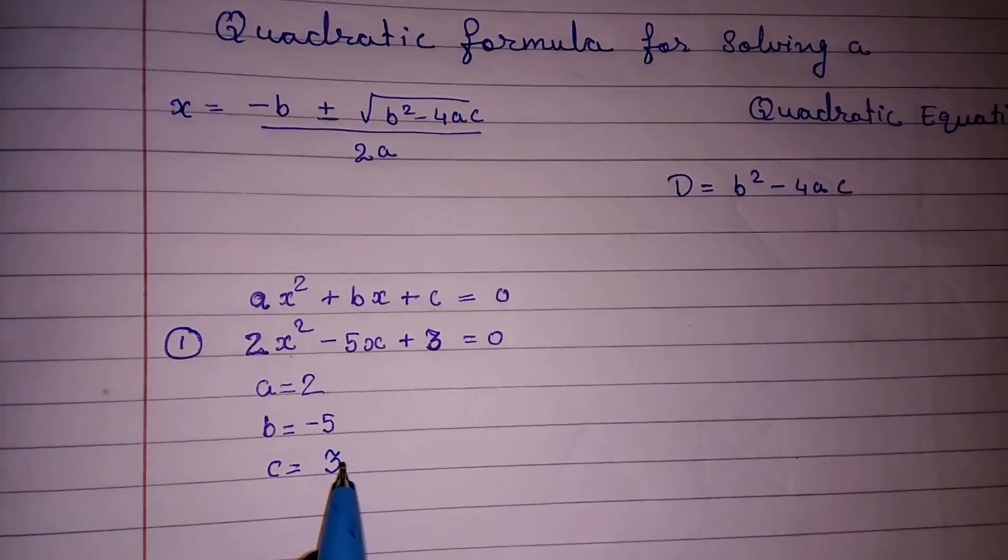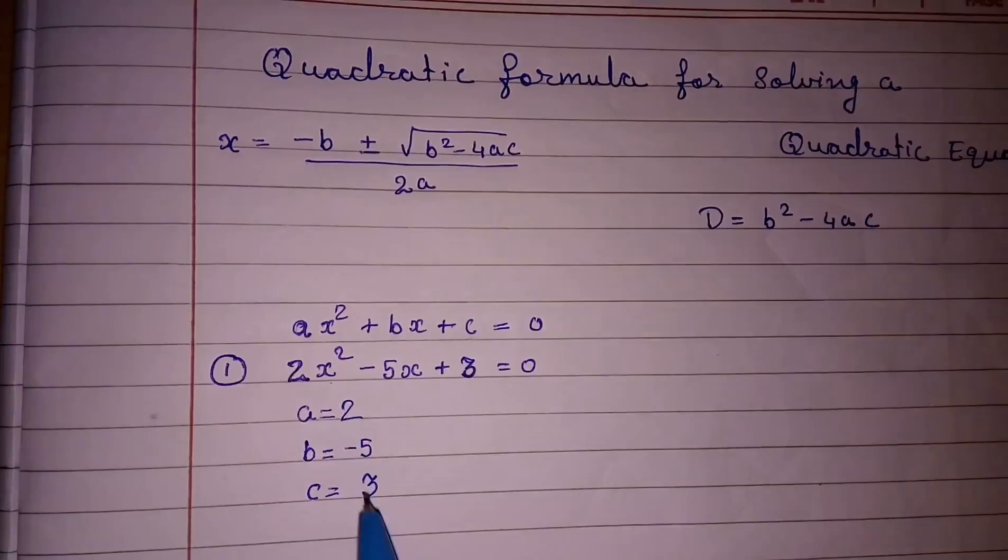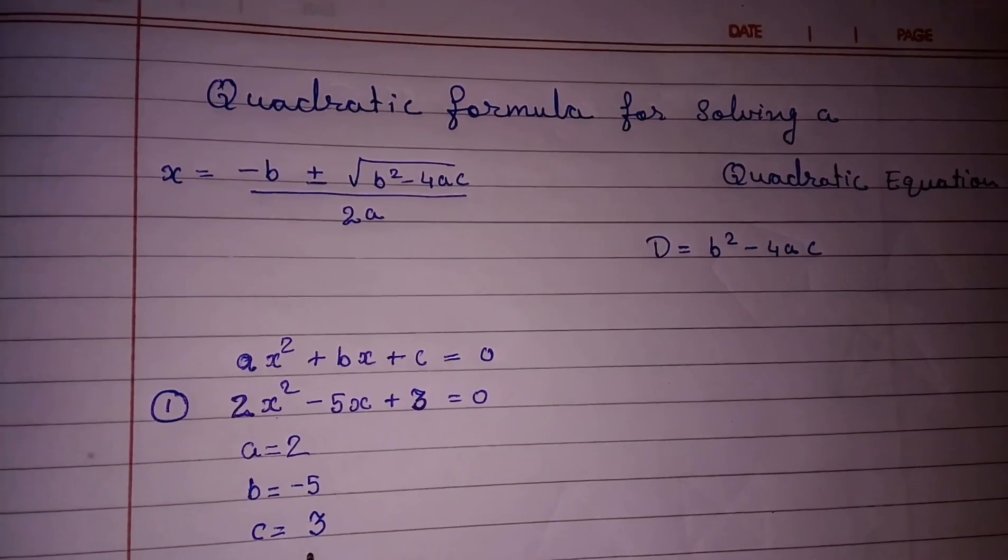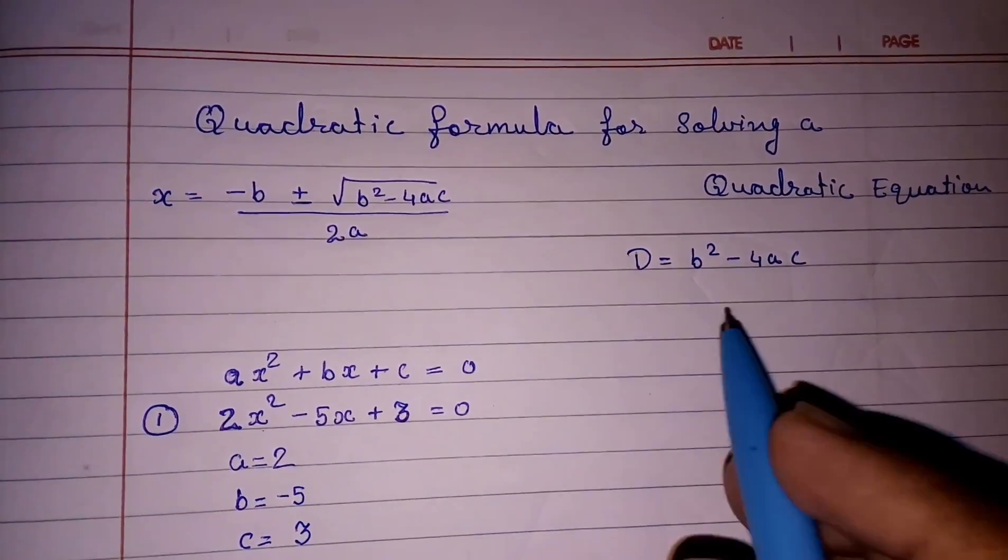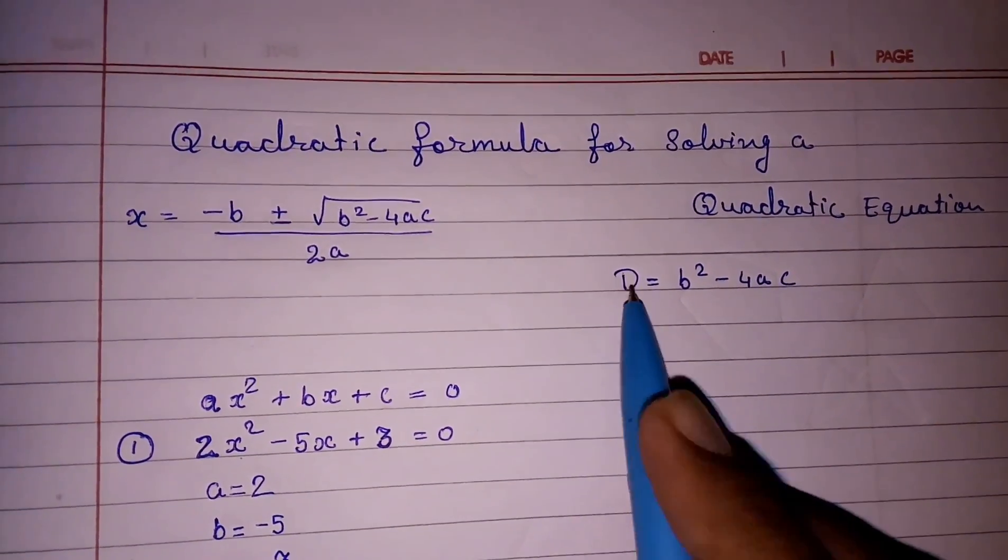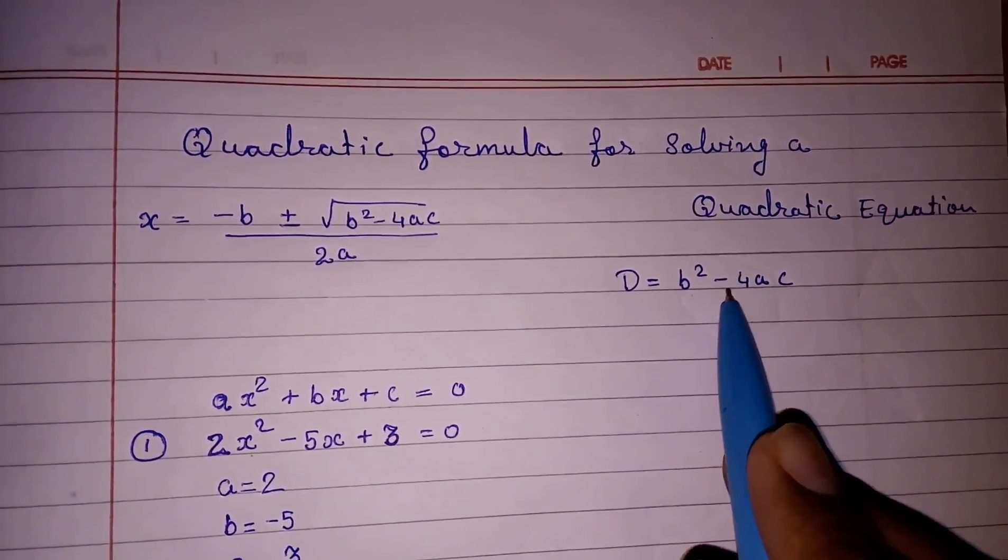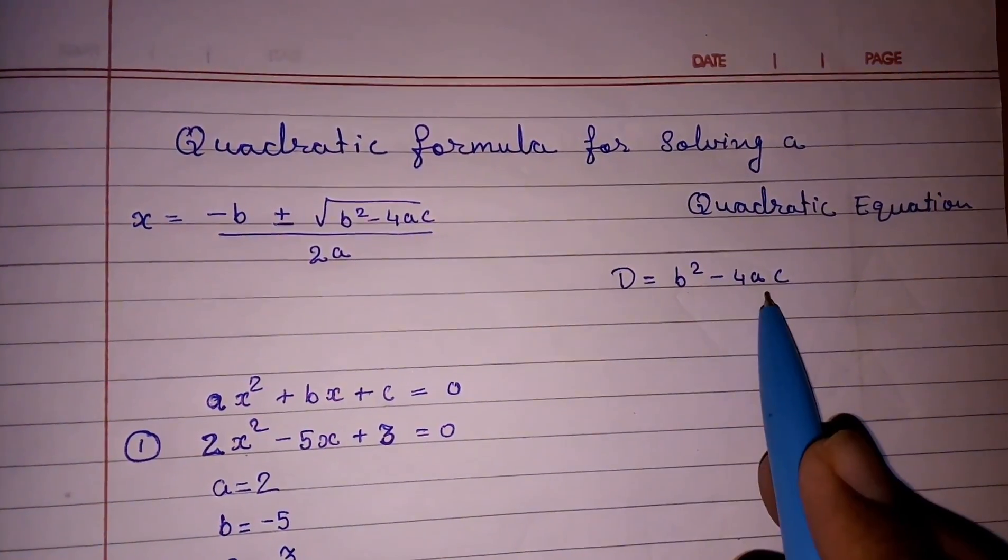Now first we have to check whether we can find the zeros or not. Means will we get zeros in this equation or not. How we can find? First we have to find discriminant D. b² - 4ac is called discriminant.